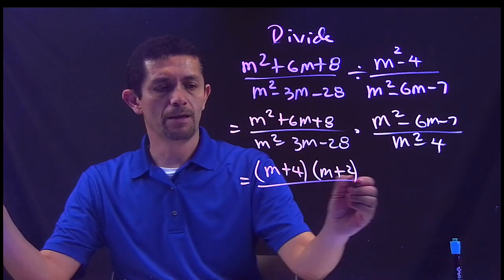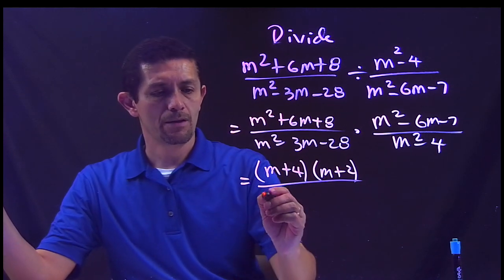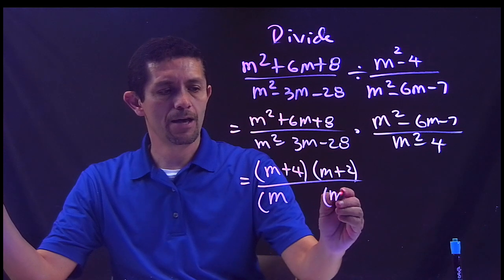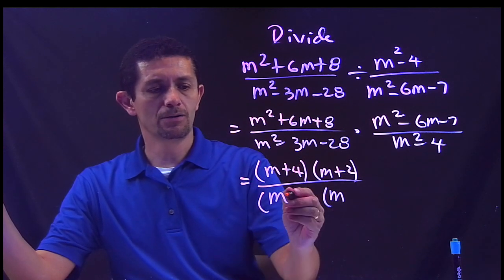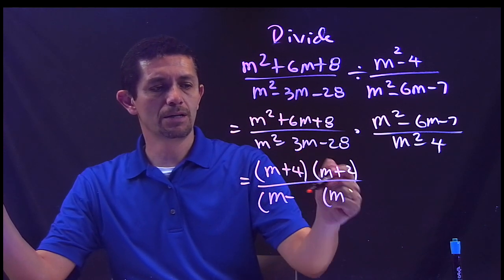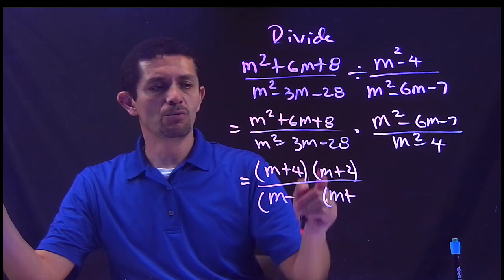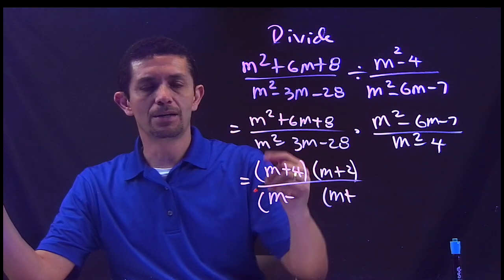The bottom: M and M, this sign goes over here, negative and negative is positive. So I need two more numbers that you multiply get 28, but when you add you get negative 3.